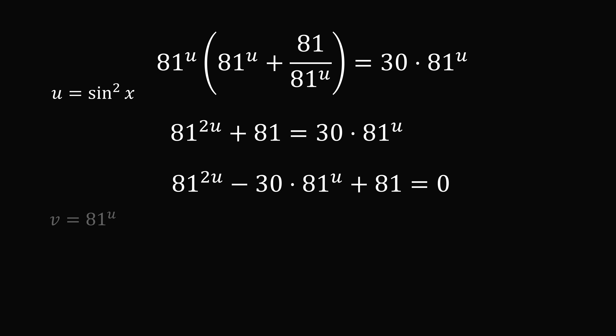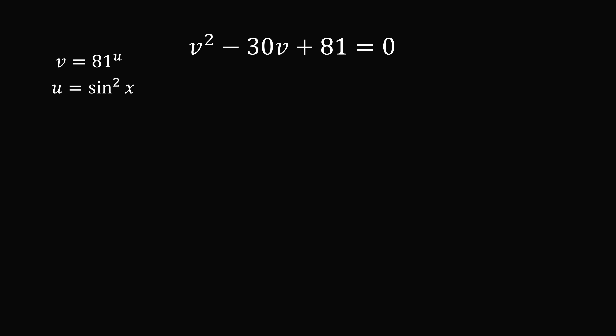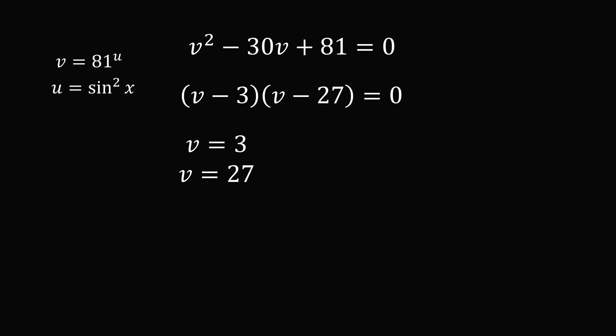We'll make a further substitution so that the equation will be a little easier to understand. Let's let v be equal to 81 to the power of u. So the equation is then v squared minus 30v plus 81 is equal to 0. We've simplified this equation to a quadratic, and as it works out, this quadratic equation can be factored. We have v minus 3 multiplied by v minus 27, and that's equal to 0. So this gives us two solutions: v is equal to 3 and v is equal to 27.